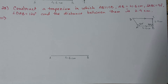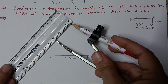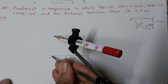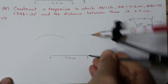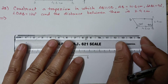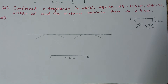Draw a parallel line CD at a distance of 2.9 centimeter from AB. Take 2.9 centimeter in the compass and put one arc from A and one arc from B. Join the tops of these two arcs to get a parallel line to AB.